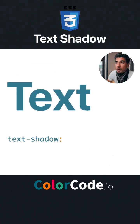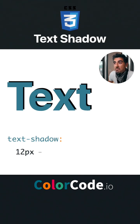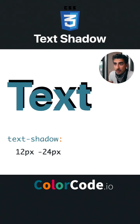We start with the horizontal offset in pixels — positive for right, negative for left. So let's say 12 pixels. Then the vertical offset: positive for down, negative for up. Say minus 24 pixels.